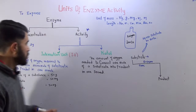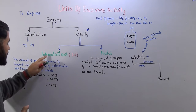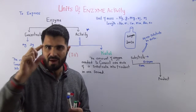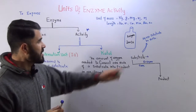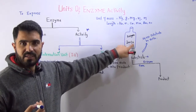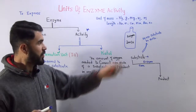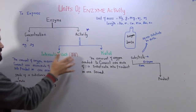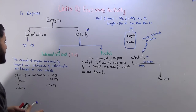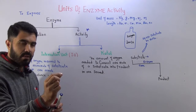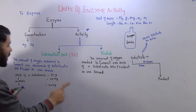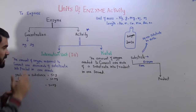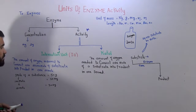First, let's look at the first unit of enzyme activity: international unit. When you take some vials or small bottles of enzyme, you might see 100 IU or 200 IU — international unit — instead of 200 milligram. The international unit is that amount of enzyme which is required to convert one micromole of substrate into product in one minute.